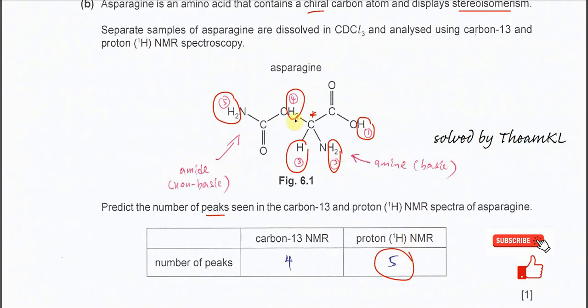For the carbon, it has one, two, three, four different carbons. Therefore it's going to generate four signals in the carbon NMR.